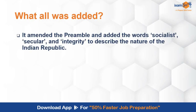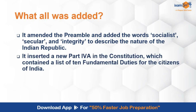Looking at what was added: it amended the preamble. Starting from the preamble itself, the words socialist, secular, and integrity were added by this particular amendment — these are very important terms added to the preamble. It also inserted a new Part 4A in the constitution, talking about fundamental duties for all citizens of India. We have fundamental rights in Part 3, directive principles in Part 4, but the duties of citizens were not there in the Indian constitution originally. This is also a very important change added through this amendment.